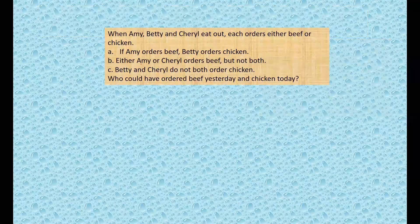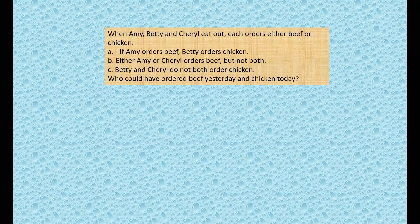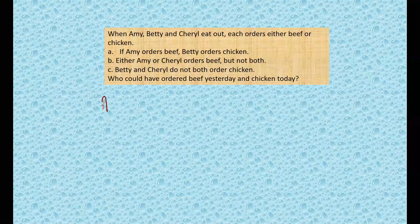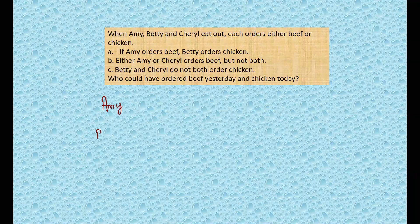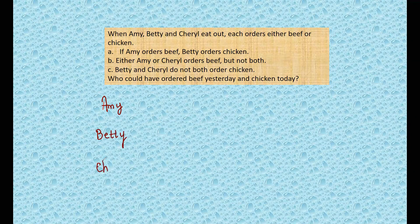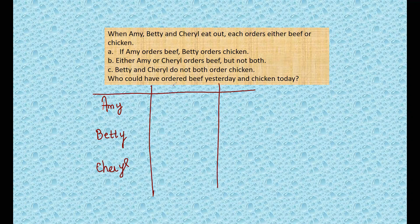Let's see this question. When Amy, Betty, and Cheryl eat out, each orders either beef or chicken. So there are three persons: Amy, Betty, and Cheryl. They have a fixed menu - they are going to order beef or chicken. If Amy orders beef, Betty orders chicken. So one at a time, they cannot order both.